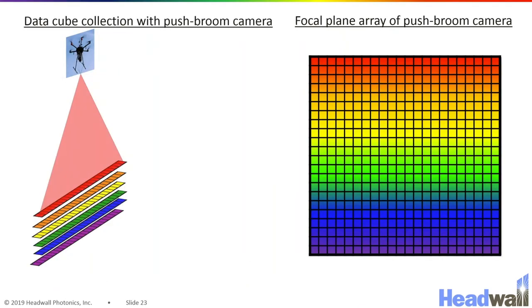Now in order to collect the other spatial dimension, we need to have motion. The way that motion is depicted in this slide is by moving the sensor. In the remote sensing world, it is easier to move the sensor than it is to move the sample or move the world under the sensor. So the drone will fly past the scene, and every time the drone moves one spatial pixel, a new frame is gathered.